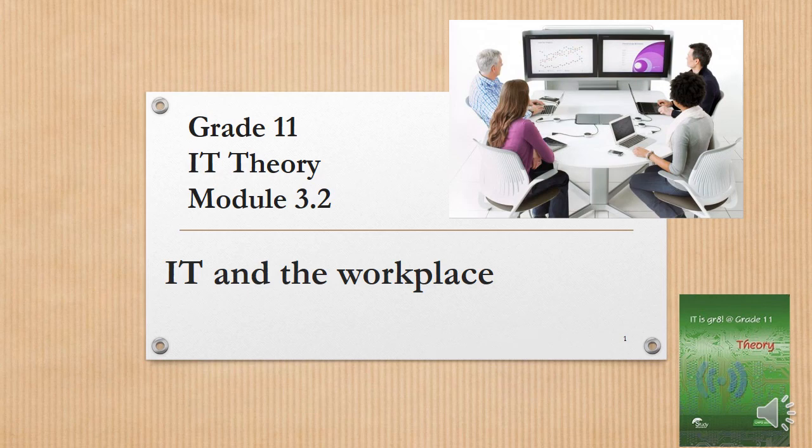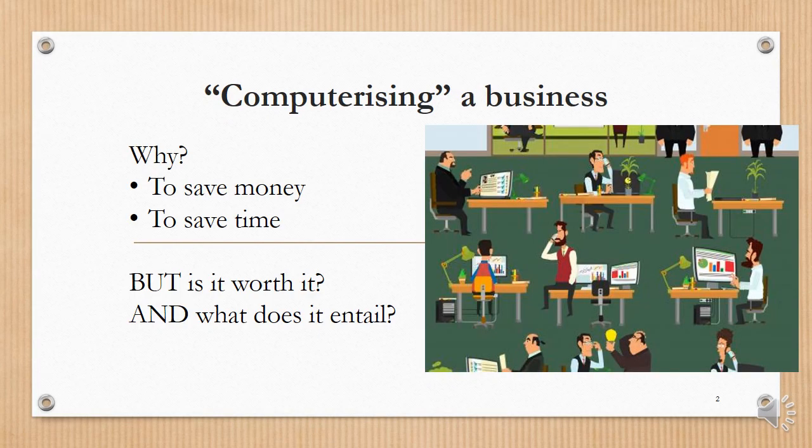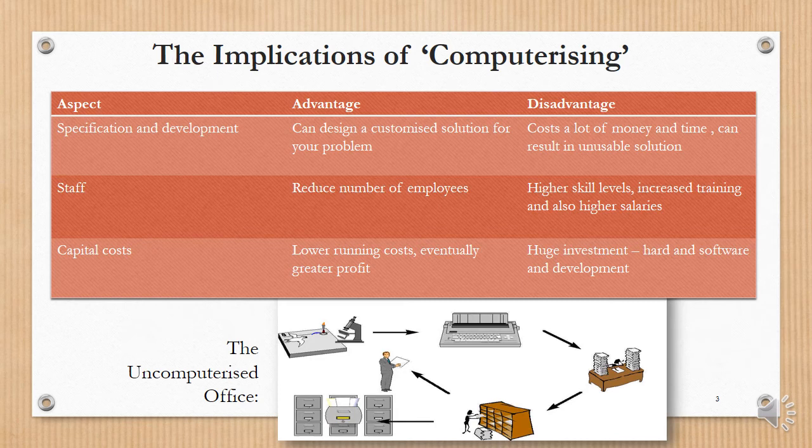Grade 11 IT Theory Module 3.2 - IT and the Workplace. When we think about computerising a business, we might think: why would you want to do this? Usually to save money and to save time. But computerising a business is going to cost money. Is it worth it? What does it entail? It's not just buying computers. You've got to think of all the rest of the things that need to be done. What are the implications of computerising? We'll look at different aspects and the advantages and disadvantages.